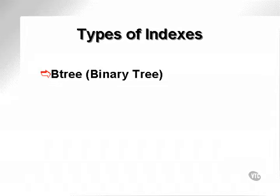Now let's discuss the types of indexes and how they work. Oracle uses a number of types of indexes and other database objects which could be classified as indexes. The most commonly used index is the B-tree, or binary tree. By binary, it implies each item within a tree has two separate options. A binary tree is really a tree-like structure upside down, where one option meets the multiple options below it.